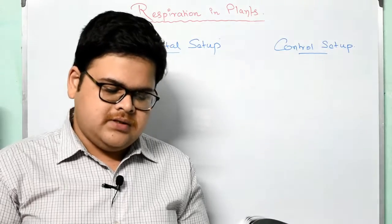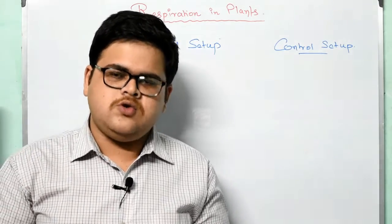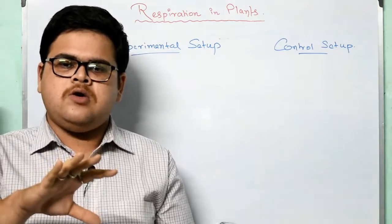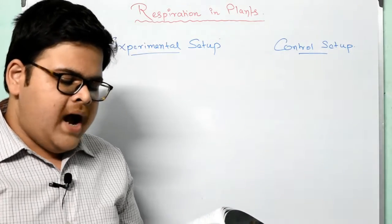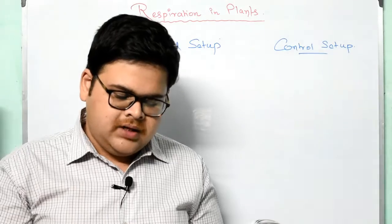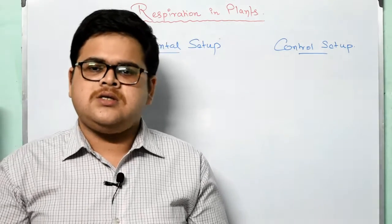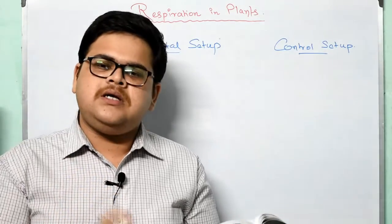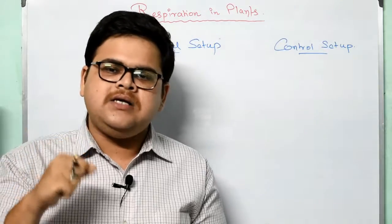Wet cotton provides water to both samples. A small tube containing soda lime — a mixture of sodium hydroxide and calcium oxide — is suspended in each flask for absorbing any carbon dioxide, since we are proving that oxygen is required. We remove carbon dioxide from the setups. After a few days, the delivery tube connected with flask A will show a greater rise in water level. When a burning paper is introduced into each flask after removing the cork, the flame is immediately put out in flask A, but it continues for a short time in flask B.